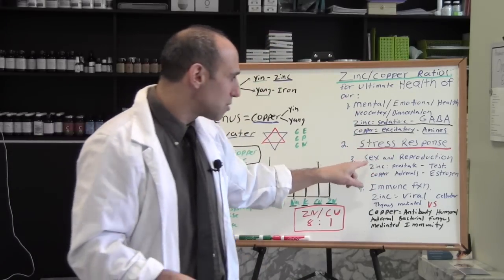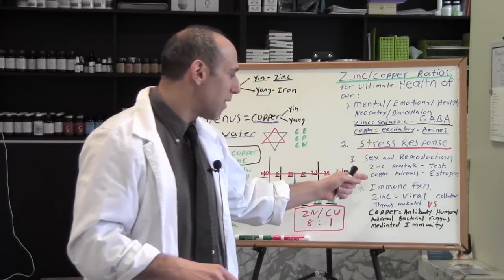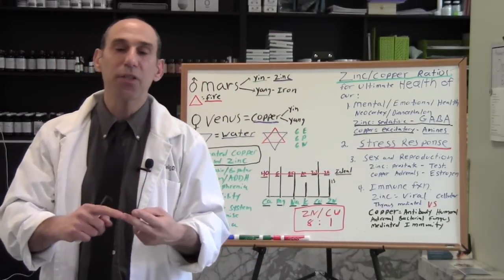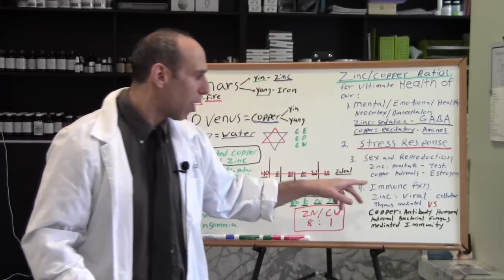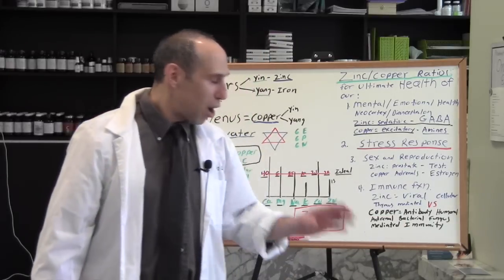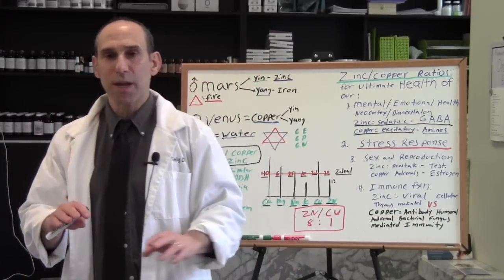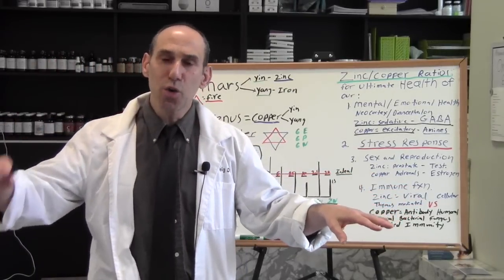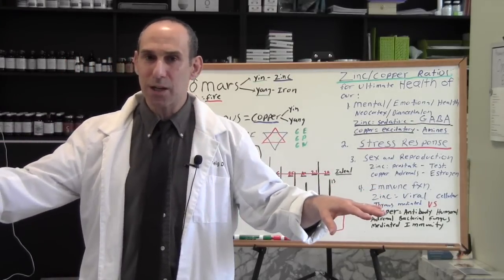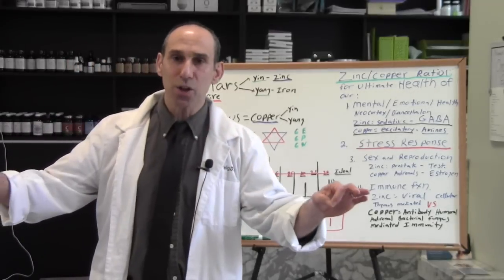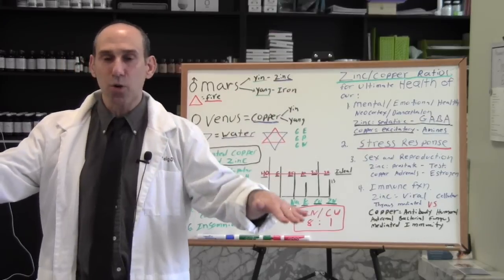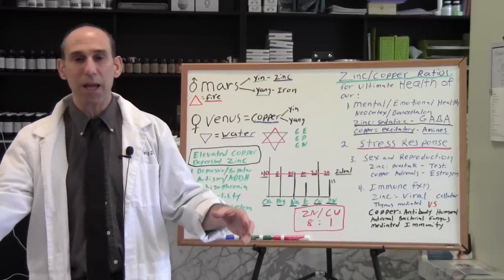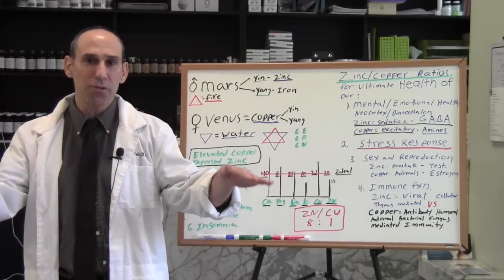So understanding how sex and reproduction are a huge player in balancing out the zinc-copper ratios so that we can have healthy sexual energy, healthy reproductive cycles. That's how important zinc and copper are in sex and reproduction. Also, our immune function. We have two immune systems. We have cellular thymus mediated immunity and we have more antibody, humoral mediated immunity. You don't want to be dominating in either or because if you dominate, let's say in the cellular, you're going to be more prone to bacterial infections. If you dominate in humoral mediated immunity, you're going to be more prone to viral infections.